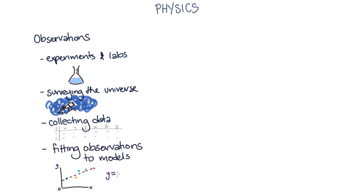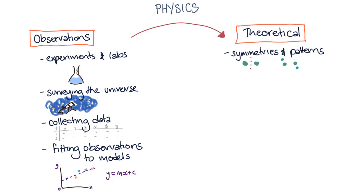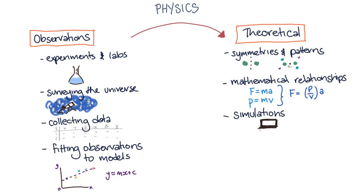But what physics through observations can't tell us is why the world is acting this way. And this leads us to physics through theory. Theoretical physics can include looking at symmetries in deeper patterns, understanding mathematical derivations and relationships, doing simulations, and gaining a more fundamental understanding of physics concepts.